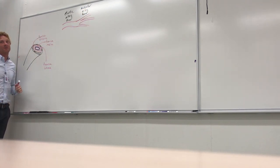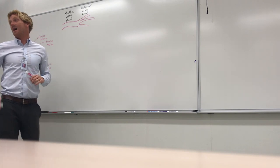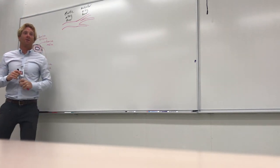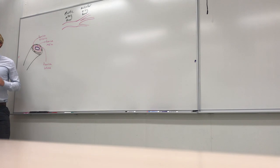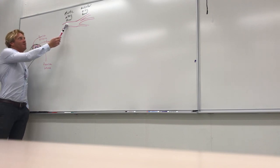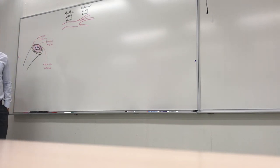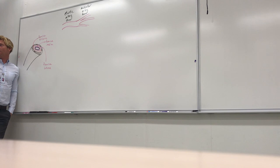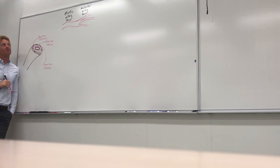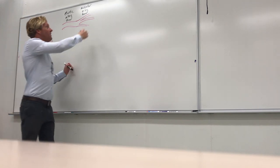Muscular arteries have the highest proportion of smooth muscle compared to any other vessel. Basically all the arteries you need to learn the names of — the brachial, radial, ulnar, femoral — these are all muscular arteries. They contain a lot of smooth muscle in the tunica media, which allows them to control where blood goes and helps control blood pressure.